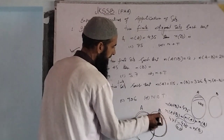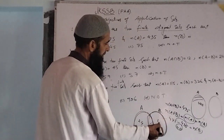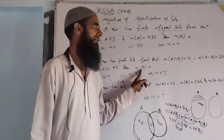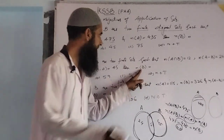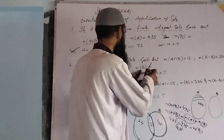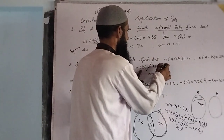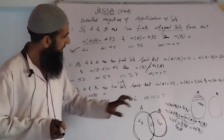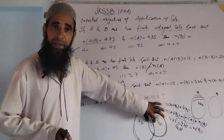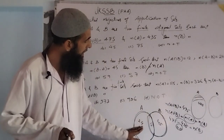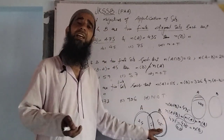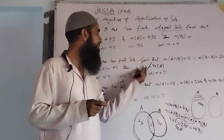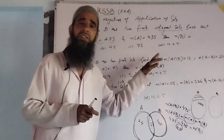We have to find the number of elements in B, and also the number of elements in A. If we have the intersection set element count given, and A minus B and B minus A elements given, we can easily find the number of elements in B and in A.